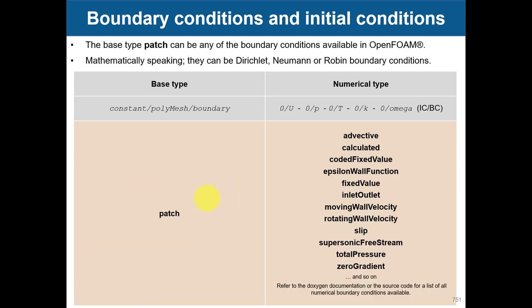When it comes to the patch base type that you put in boundary, you can take any of these numerical values — and here is where things get complicated. My advice: do not go and look at all those boundary conditions because it can be very confusing. Here you have the list of the most common ones you are going to use: zero gradient and fixed value. Then you have the calculated type that you can program, and one you can use for turbulence models.